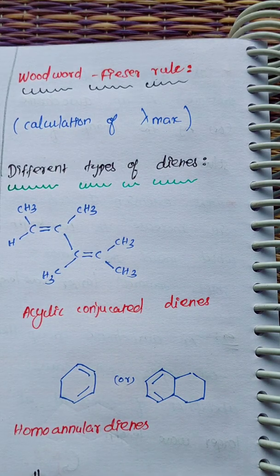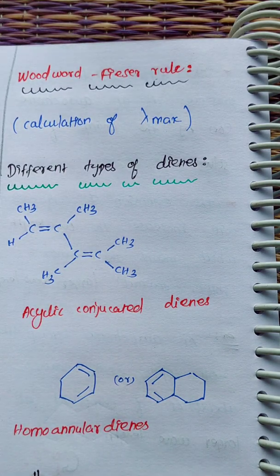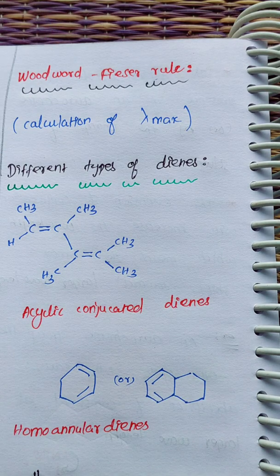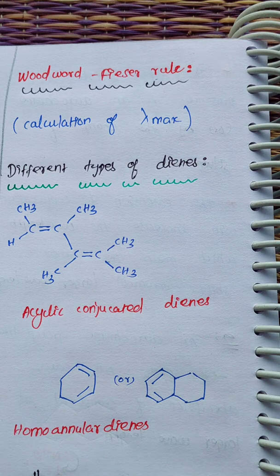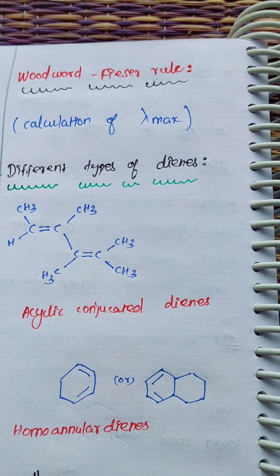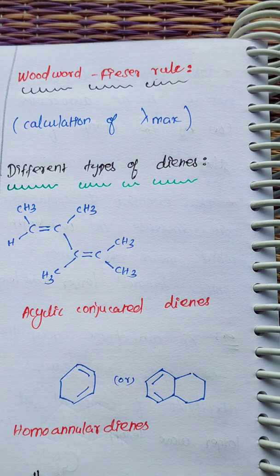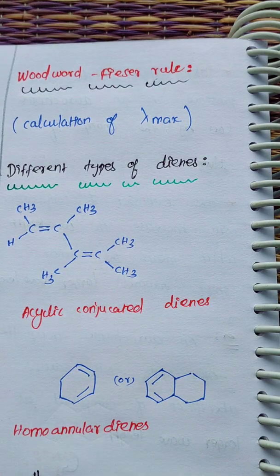We are going to discuss theoretical questions and increase concept knowledge. Now we will discuss the Woodward-Fieser rule. This rule will be the basis for other questions. Some NMR questions will also be asked. In the Woodward-Fieser rule, we will discuss the lambda max values. I am going to introduce different types of dienes and explain the basics before moving to problems.